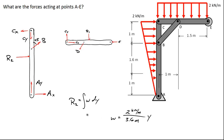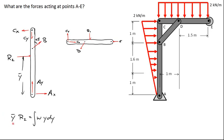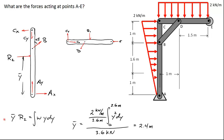Integrating W over the full height gives R2 equal to 3.6 kilonewtons. To find where R2 acts above point A, we use Y-bar: R2 times Y-bar equals the integral of W times Y dY over the full length. Solving for Y-bar gives 2.4 meters above point A. So R2 of 3.6 kilonewtons acts 2.4 meters above point A.